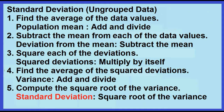How to find the standard deviation for ungrouped data: 1. Find the average of the data values — this is the population mean. 2. Subtract the mean from the data values. 3. Square each of the deviations from the mean. 4. Find the average of the deviations — this is the variance. 5. Compute the square root of the variance — this is the standard deviation.